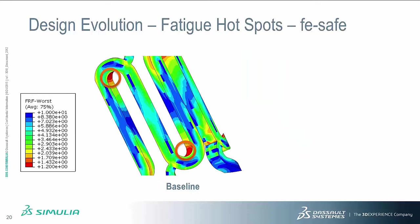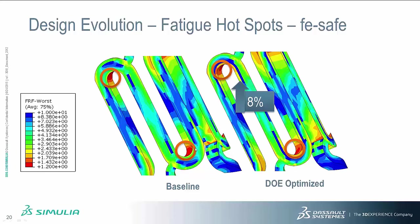The second factor we want to look at is the fatigue hotspot. The same region where stress is higher also leads to the lowest fatigue factor, and those are the two regions for which the fatigue factor is lowest. The DOE-optimized stent leads to an 8% improvement in the worst fatigue factor — from approximately 1.22 to a value about 8% larger.